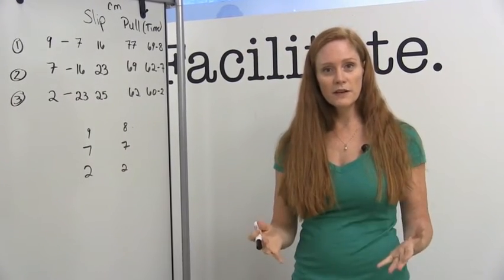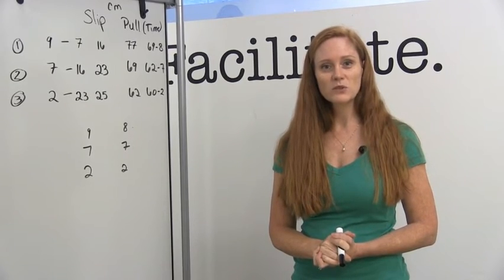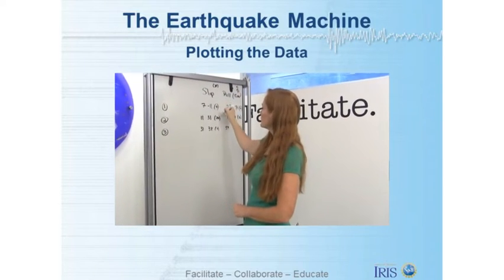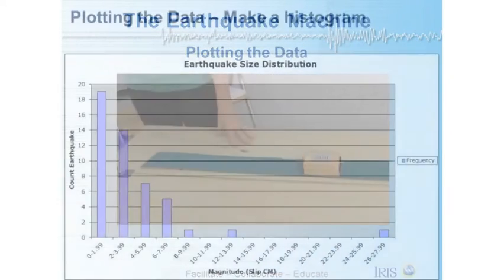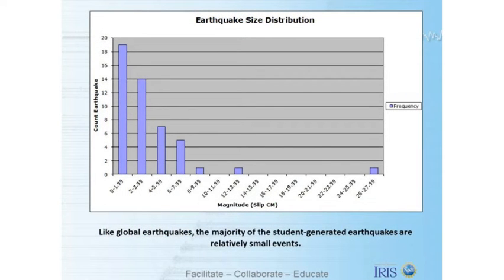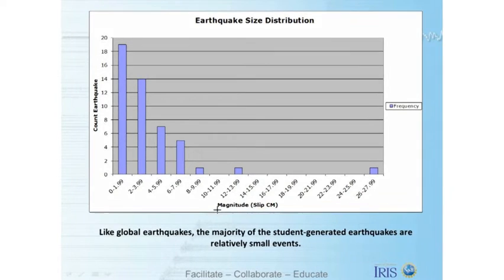Go ahead and turn off the video, make sure you get 30 data points, and then we'll do a data review together. By now you should have 30 points charted while making your earthquakes with the earthquake machine. In order to plot those up, you'll want to create a histogram like the one on the screen. The first thing is to figure out how you want to group your earthquakes — we call this binning. I've grouped earthquakes between magnitude 0 and 2 centimeters into one group, and so on up to my highest magnitude earthquake.